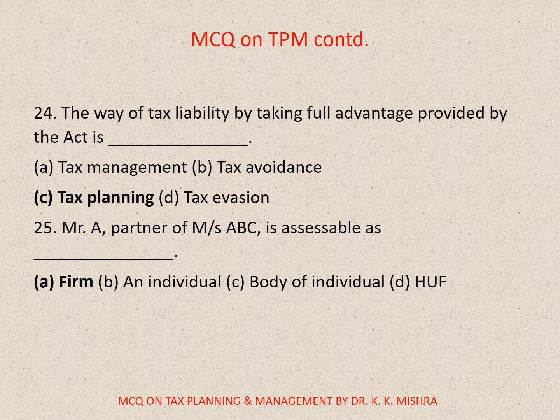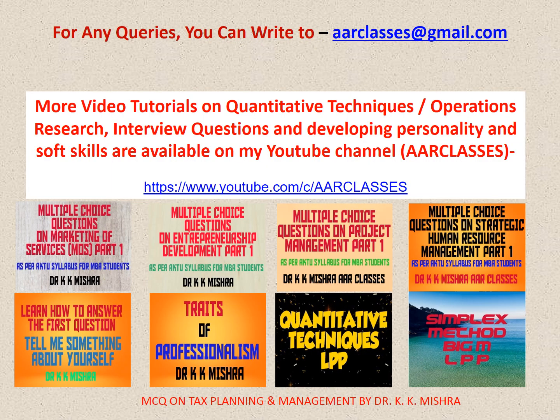Question 26: Mr. A, partner of firm ABC, is assessable as — the correct option is A. Firm. For all about this video tutorial, I hope that you have liked it. If you have liked it, please do not forget to subscribe and press the bell button and pass it on to others nearby and in the future.